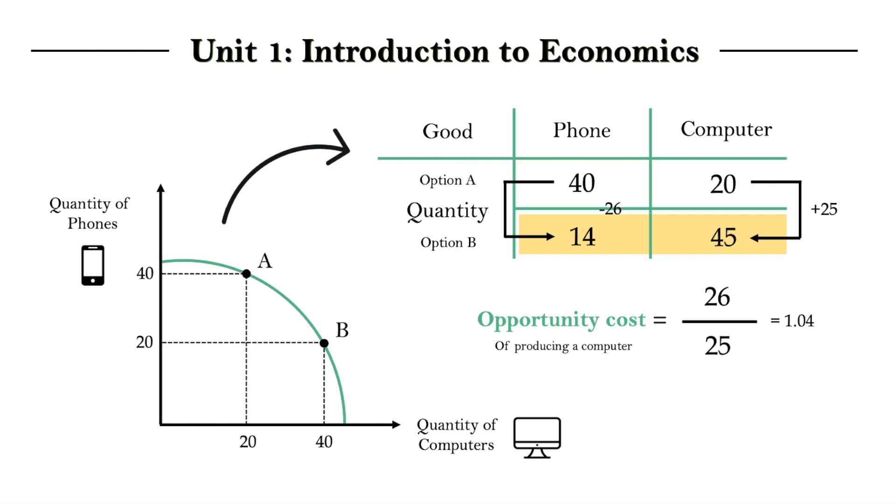As we move along different points on the curve, each new choice to produce at a particular point means that more resources are being allocated to one good, and those resources have been allocated away from another good. So, we're illustrating both choice and opportunity cost of that choice on the PPC.